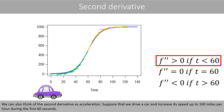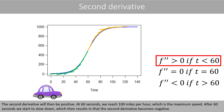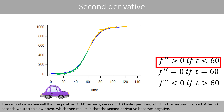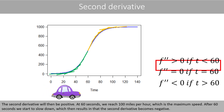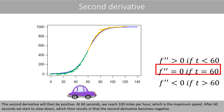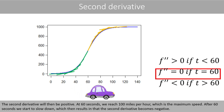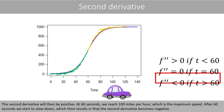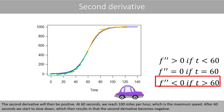We can also think of the second derivative as acceleration. Suppose that we drive a car and increase the speed up to 100 miles per hour during the first 60 seconds. The second derivative would then be positive. At 60 seconds, we reach 100 miles per hour, which is the maximum speed. After 60 seconds, we start to slow down, which then results in the second derivative becoming negative.